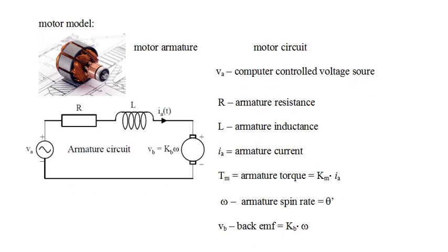The torque on the rotor causes it to spin with rotation rate omega. Omega equals theta prime, where theta is the rotor angle. The spinning rotor induces a back voltage in the circuit, represented by the voltage source V_B on the right, with the back voltage V_B equal to the motor back EMF constant K_B times omega, the rotor spin rate.